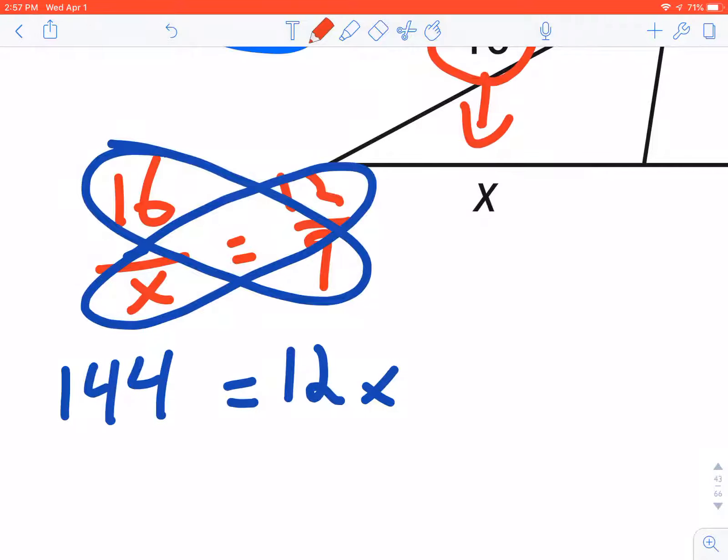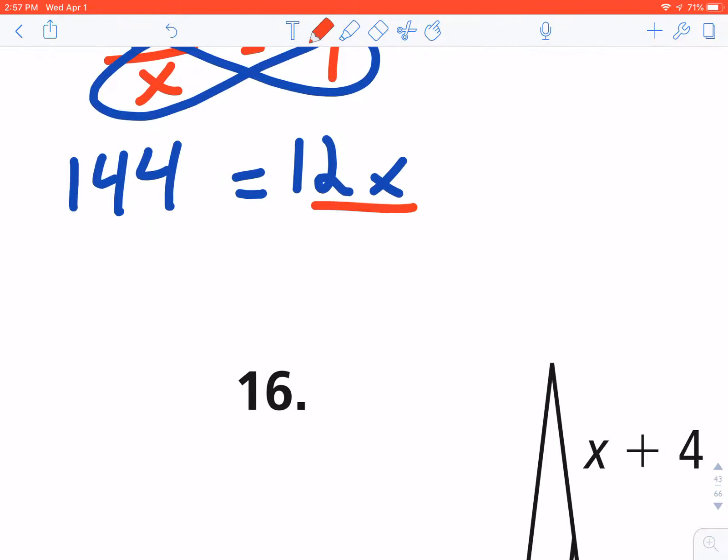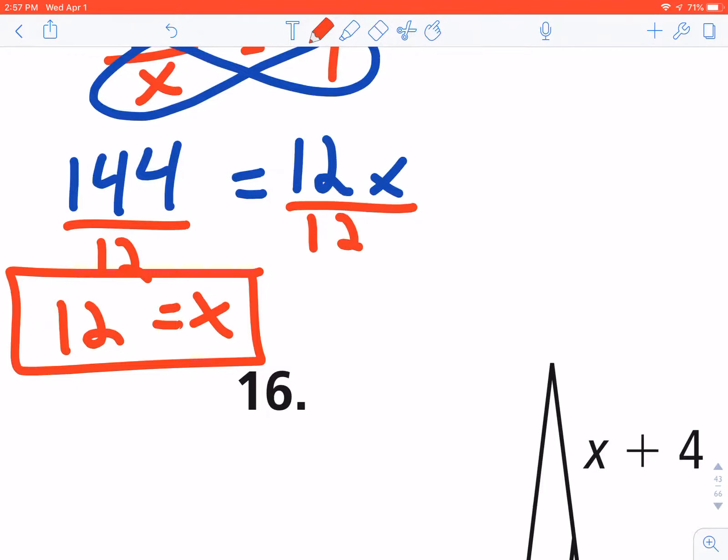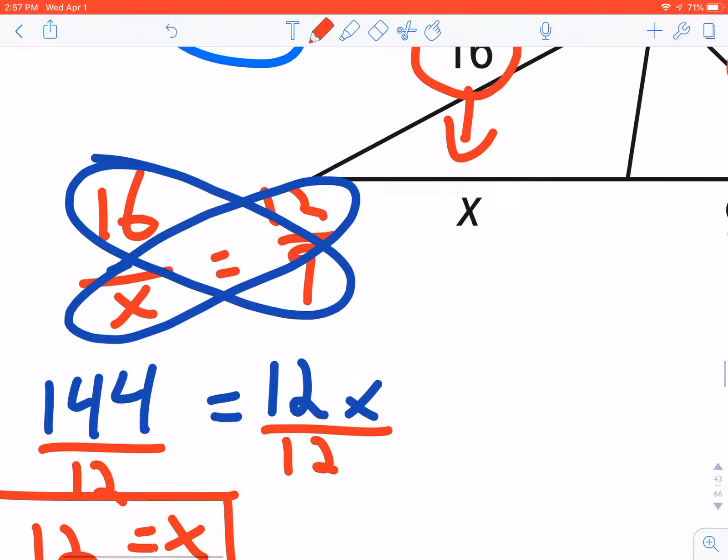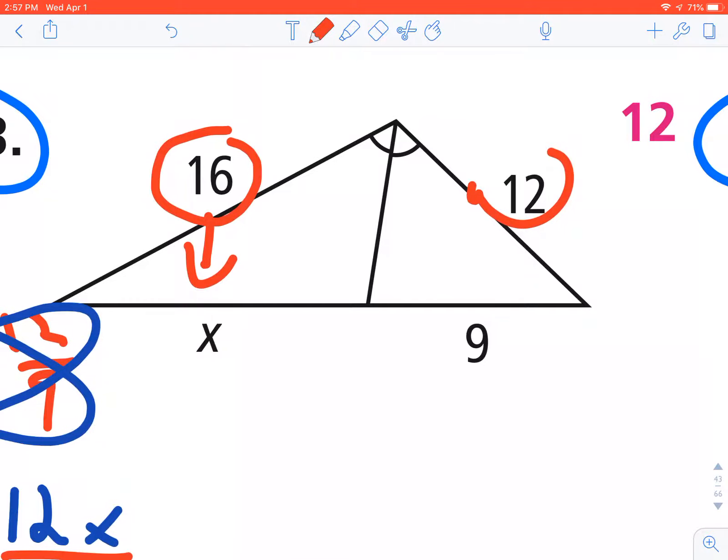Then the last step is to divide both sides by 12 to get your answer for x of 12. So again, your setup if you wanted to work: 16 is to x as 12 is to 9.